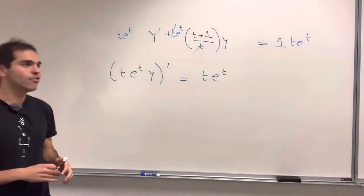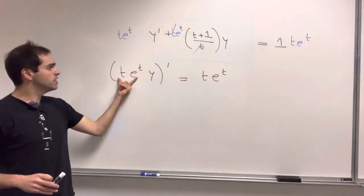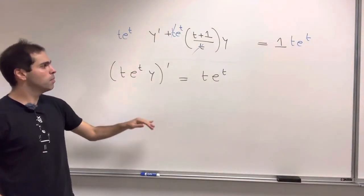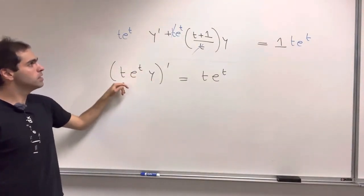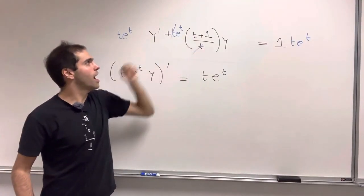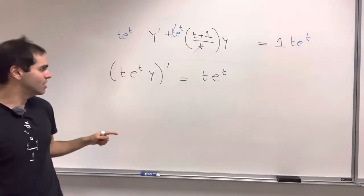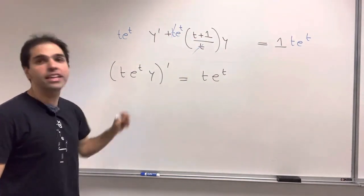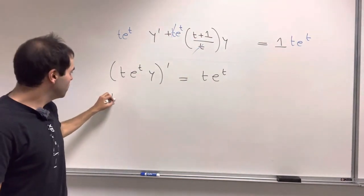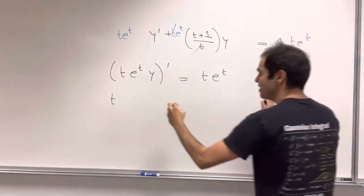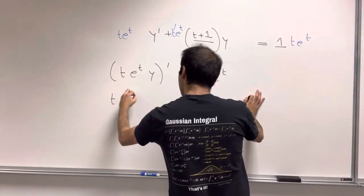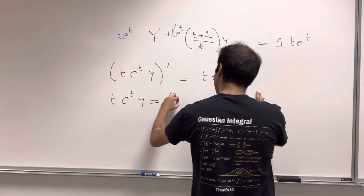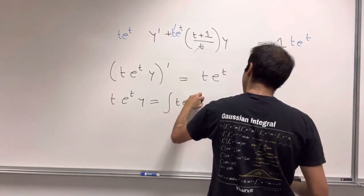You get t*e^t times y prime plus y times t*e^t, which actually becomes (t+1)*e^t. All right, and all we need to do is integrate and then solve for y. So then what we get is t*e^t*y equals integral of t*e^t dt.